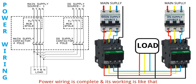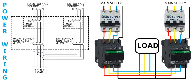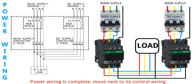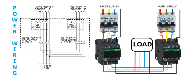Power wiring is complete. Its working is like that — only one contactor will work at a time. It means that our output load will be connected to either the main supply or the generator supply. Now move to its control wiring.